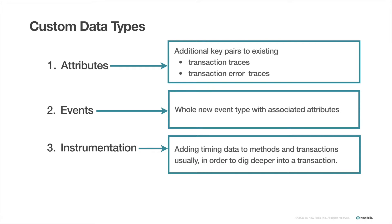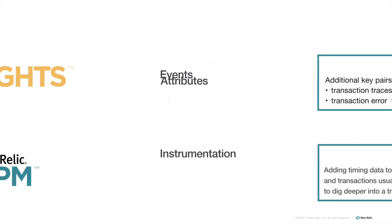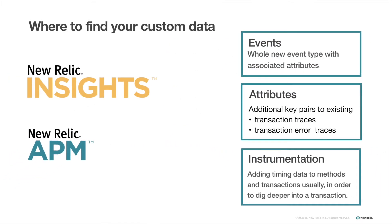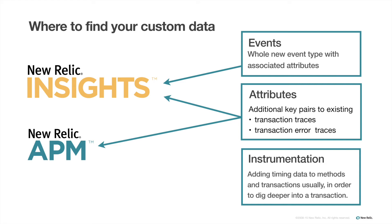Remember, different types of custom data serve different purposes and will show up in APM, Insights, or both, depending on what you add. If you add custom events, they will show up in Insights as whatever event type you define. Any custom attributes you add will show up in both Insights and APM under Transactions and Transaction Error Events. And finally, custom instrumentation will show up only in APM as more finely detailed data about your app's transactions.